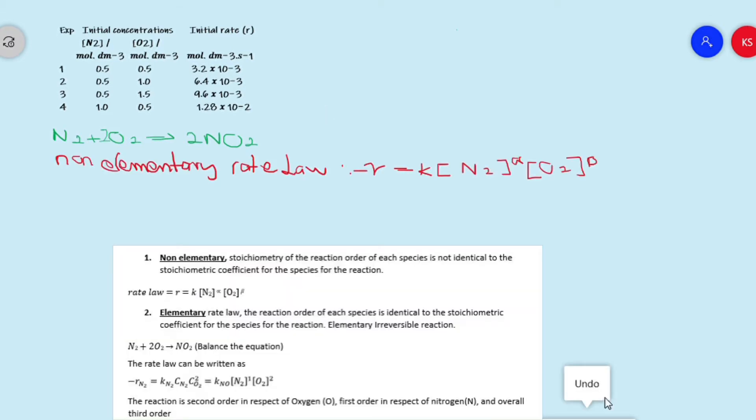What if this equation was elementary? How would we write down the rate law? This is how we would have written down the rate law of the elementary equation, assuming that the stoichiometric coefficients are the alpha and beta of the unknowns. The reaction would have been first order for nitrogen and second order for oxygen, and the overall reaction would have been third order.